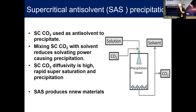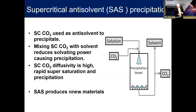After precipitation, we can reduce the pressure, making it trivial to separate the CO2 back to the gaseous phase, along with any unused solvent. This can be done in a closed loop, recycling the CO2 back around.